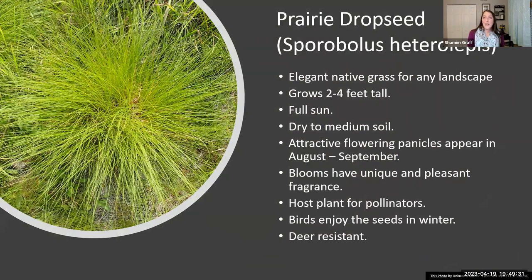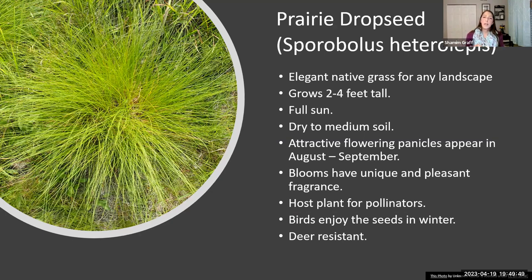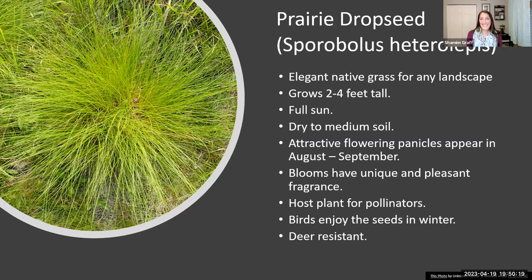Prairie dropseed — I like to call these nature's tiny fountains. They grow in little clumps that arch over into these little fountain shapes. It grows two to four feet tall, but don't be alarmed by four feet — when it throws up its seed heads that's the tall part; otherwise it stays more mounded to the ground. It likes full sun and dry to medium soil. You'll see it flower around August to September. It has a very unique scent, is a host plant for pollinators, and will continue to feed the birds all through winter.